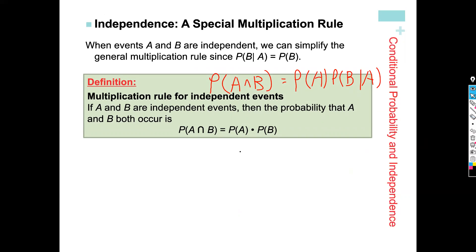Let's move on to talk about independence. Independent means A doesn't depend on B — knowing A happens doesn't have any effect on B happening.